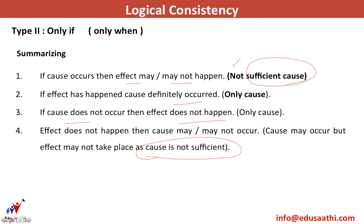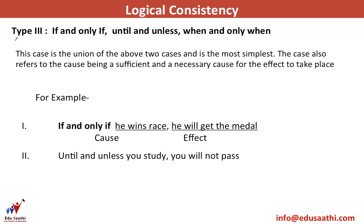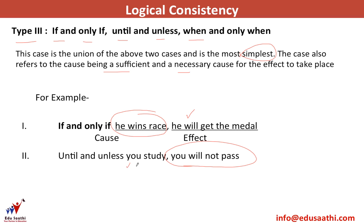Let's move to the third type of logical connective: 'if and only if,' 'until and unless,' and 'when and only when.' This is the union of the above two cases and is the simplest case. The cause is both a sufficient and a necessary cause for the effect. For example: if and only if he wins the race will he get the medal; until and unless you study, you will not pass. For getting the medal you must win the race — this is the only cause and will definitely result in the effect.